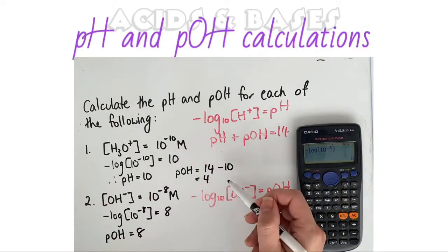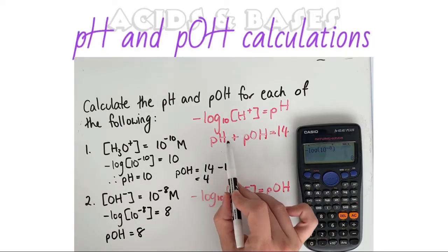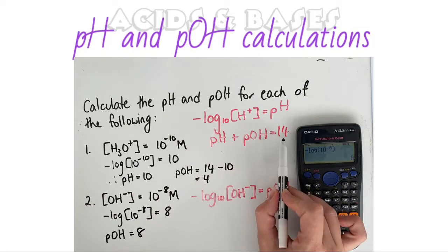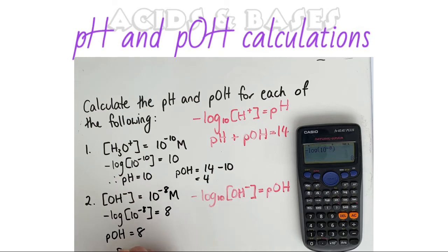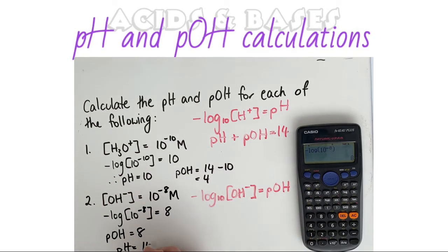Similarly, like before, we now can use this equation. Our pH plus our pOH is going to equal 14. And that means that our pH is going to equal 14 minus our pOH, which is 8.